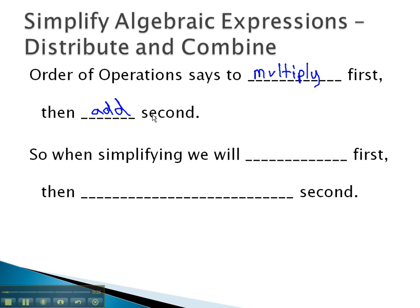Following this order of operations, when simplifying, we will do our multiplication step first, which is what we did when we distributed. We will distribute first and then add second, and adding was when we combine the like terms.